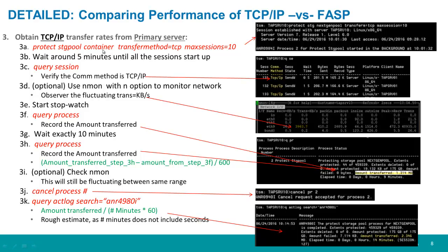Now we'll do the comparison for the TCP/IP transfer of a Protect Storage Pool. From an administrator command line on the primary server, issue Protect Storage Pool with the container name, transfer method equals TCP (the default), and max sessions equals 10 (the default). Wait about five minutes, then issue a query session to verify that the communication method shows up as TCP/IP.